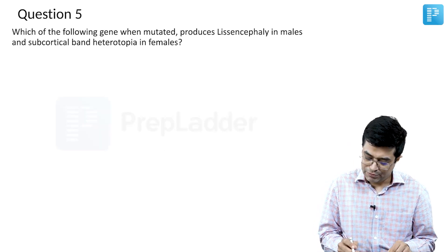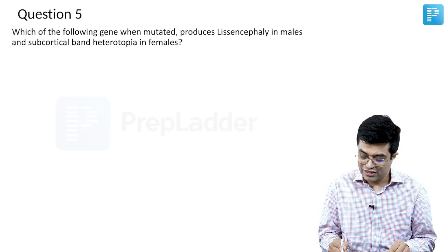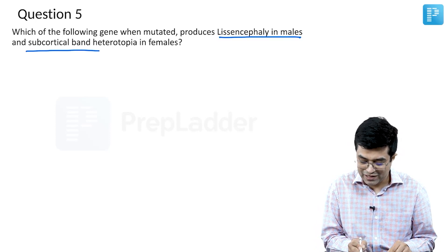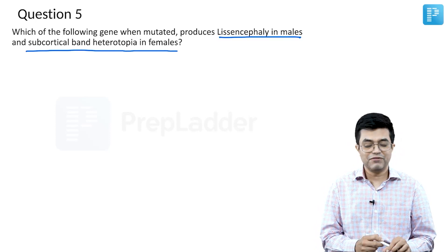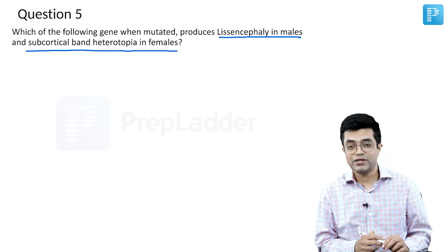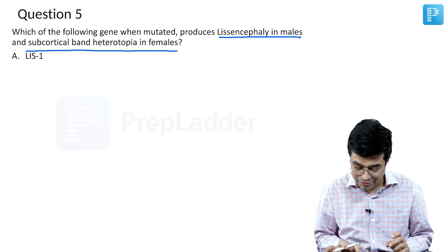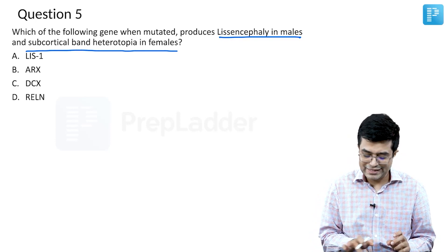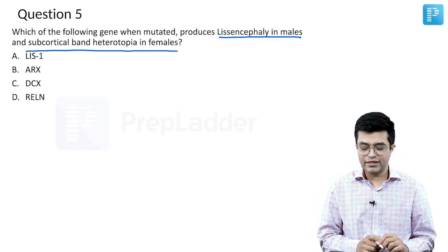Which of the following genes, when mutated, produces lissencephaly in males and subcortical band heterotopia in females? This is a very interesting question. The options are: LIS1, ARX, DCX, and RELN gene.